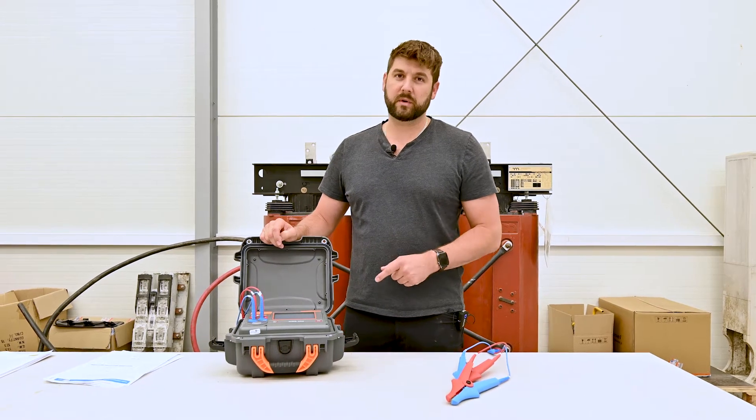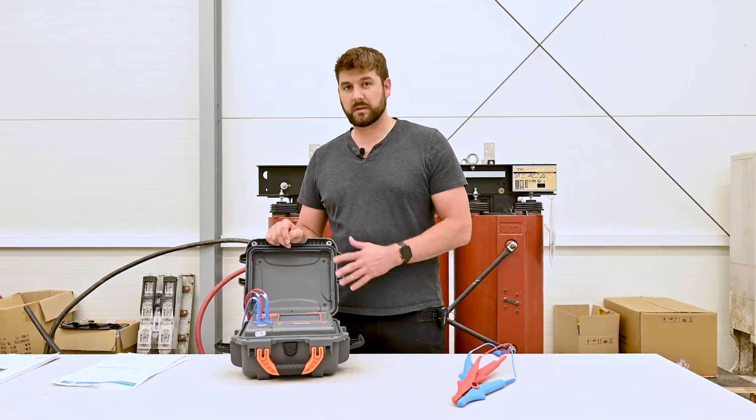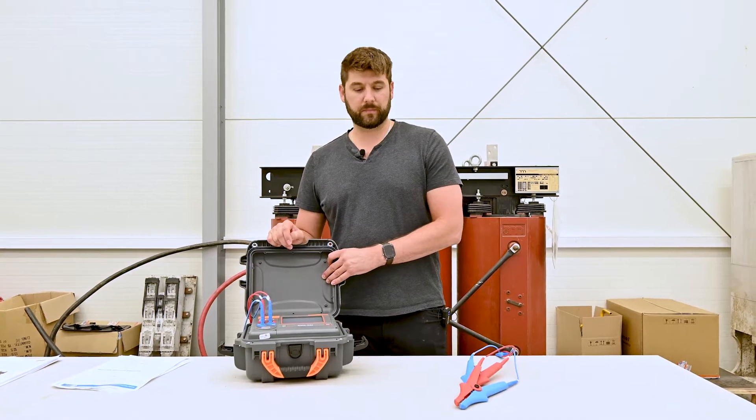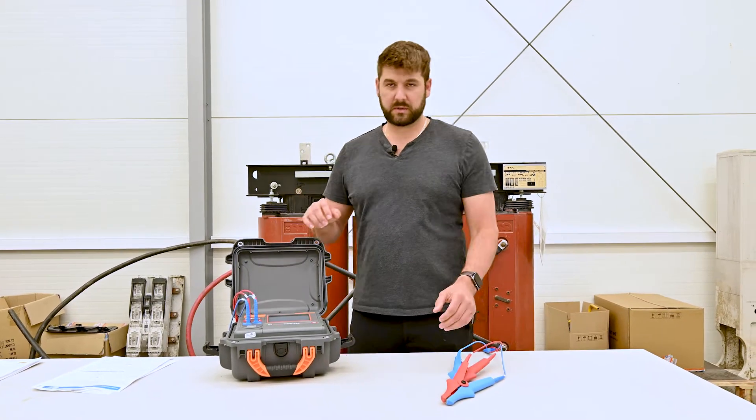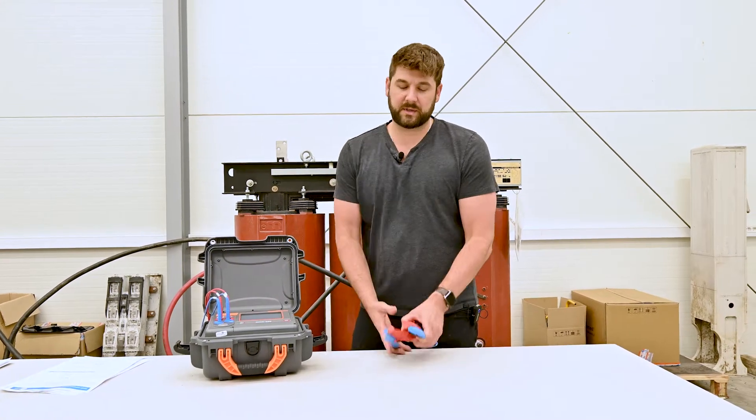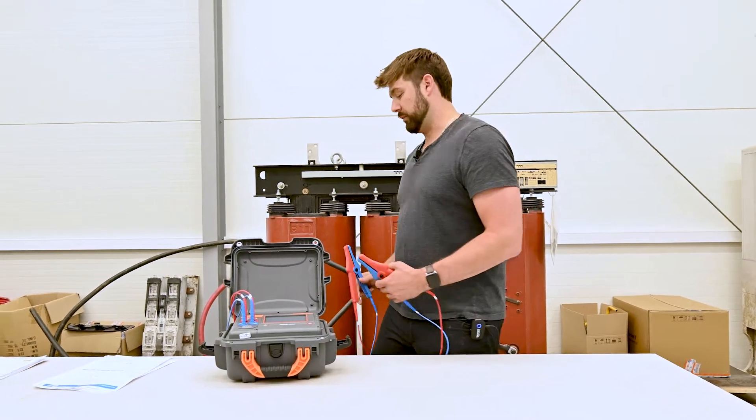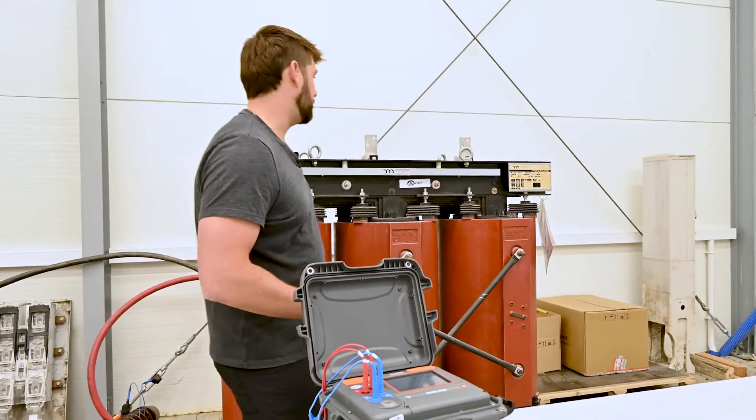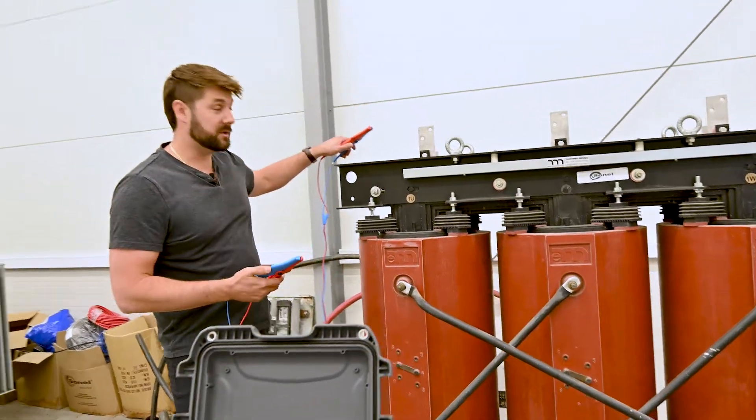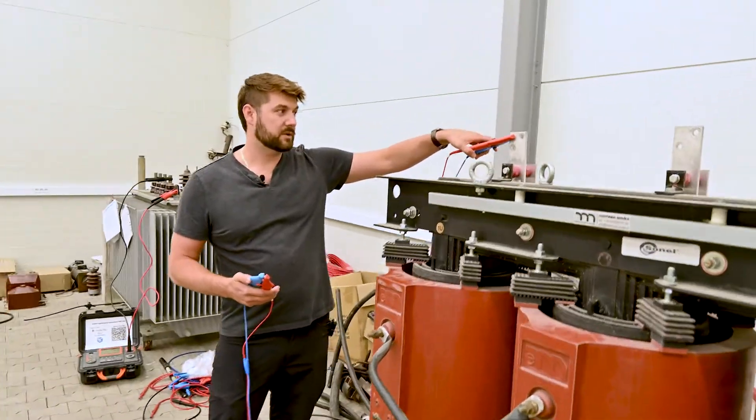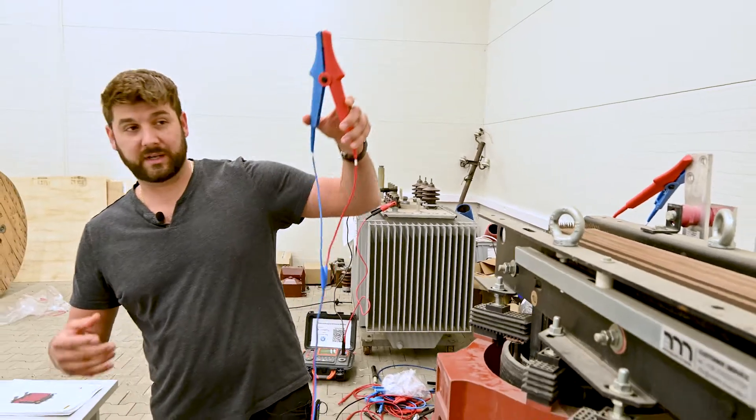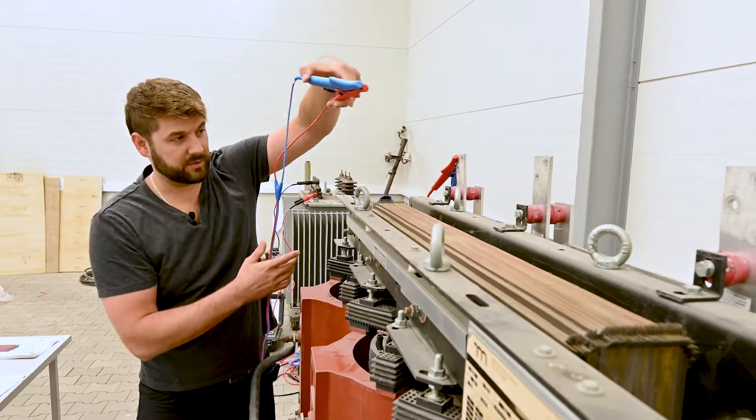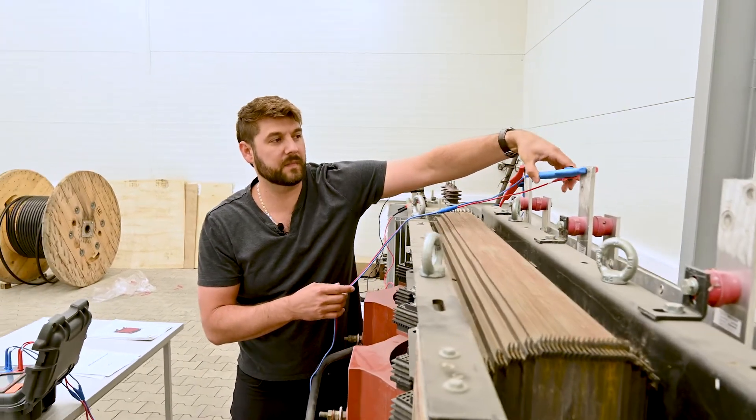Alright, so we're going to use our MMR650, which is a 10 amp micro-ohmmeter equipped to handle inductive test objects like a transformer winding. The first thing we have to do is go to the low side of the transformer, which usually has the big conductors you see here.